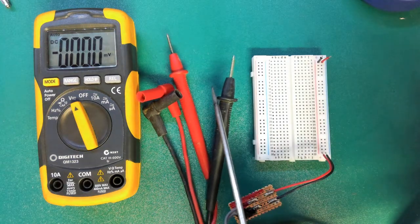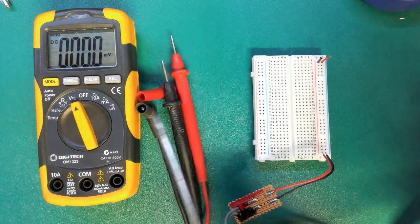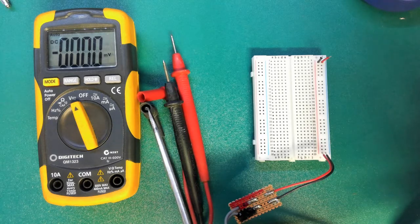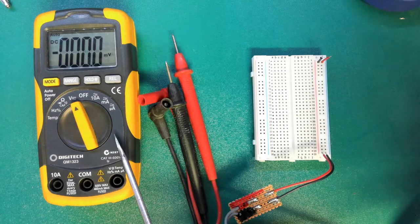These are the test probes that came with the multimeter and that's a banana plug inside there. You need to plug these into your multimeter to use it.